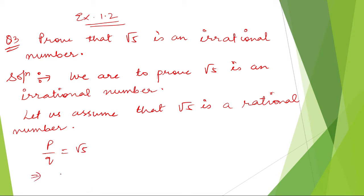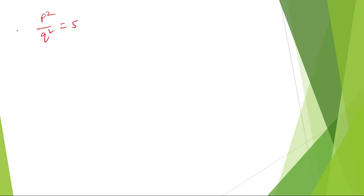Squaring both sides, we have P square by Q square is equal to root 5 square. So we can write P square by Q square is equal to 5. We can write again: P square is equal to 5Q.